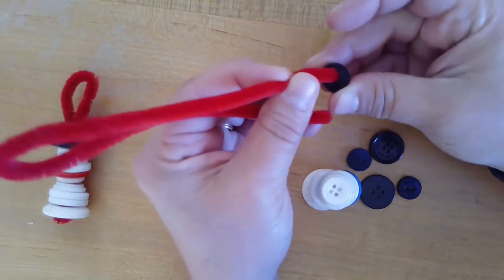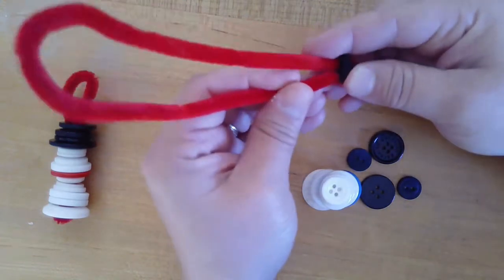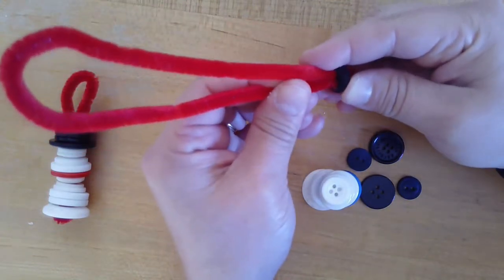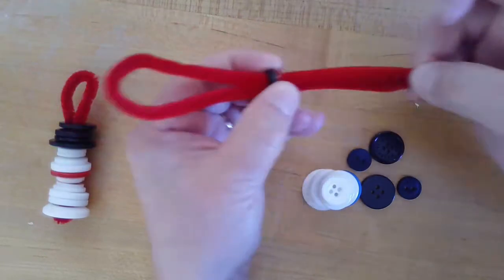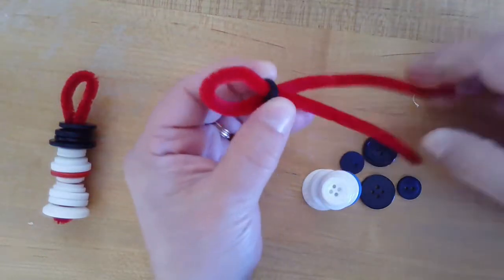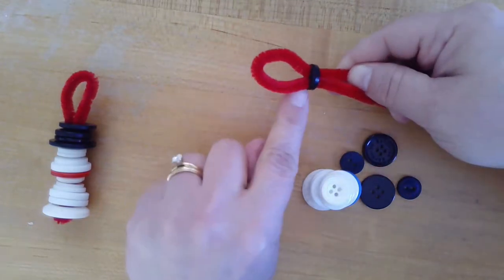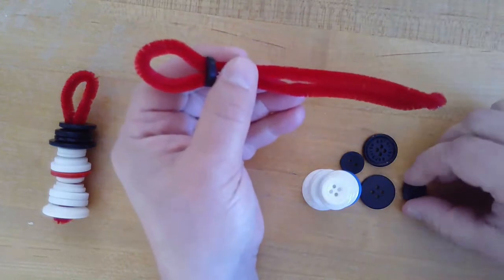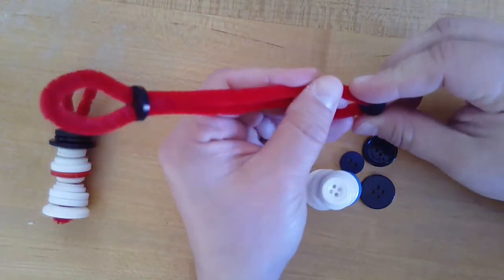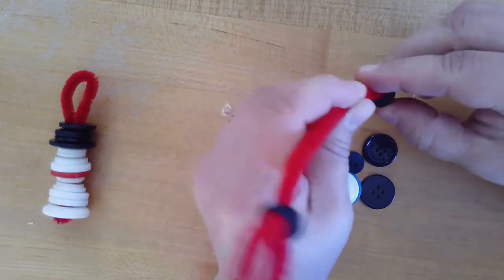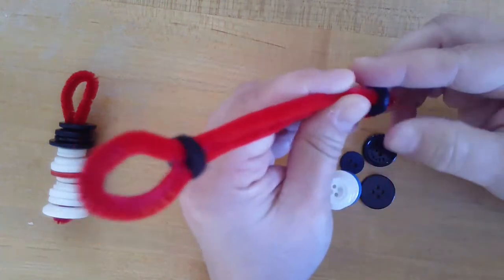Some buttons will have two holes, some will have four - it just depends on the button style. Now be careful as you work - the chenille stems will get pointy at the bottom with the metal. Remember to leave about a half inch of room at the top to hang, and then thread your buttons in the order that you had predetermined.